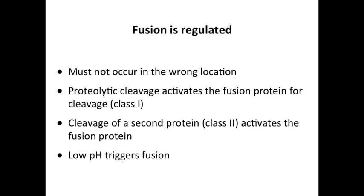Evolution has selected for viruses that have mechanisms to regulate fusion. Because if you do it in the wrong cell, you don't succeed. You can't replicate and you never make it to the next step. You become extinct. Often, proteolytic cleavage activates the fusion protein for cleavage. We saw that with the hemagglutinin of influenza for class 1. For class 2, a cleavage of a second protein can activate it. And then, of course, low pH in many cases also triggers fusion.